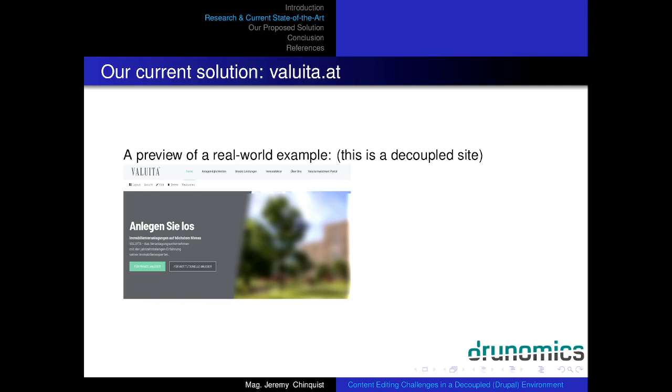So here's one of our previews. This is actually a decoupled site that we have live, valueeat.t. As you can see, very basic, but we've got the tabs from the back end that are loaded. So actually, the person is logged in at this point in the front end and pulling Drupal content, Drupal administrative, the Drupal administrative menu for that content.